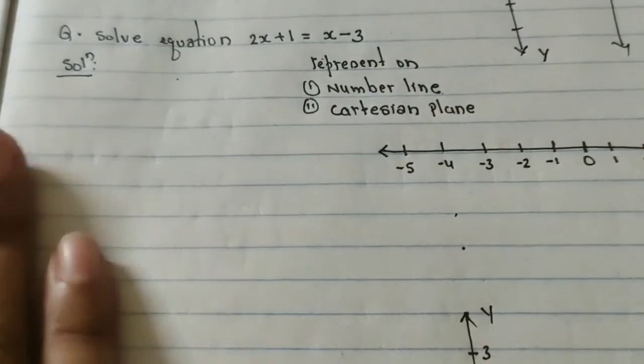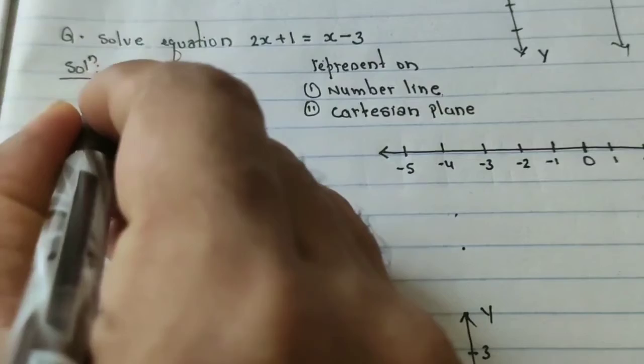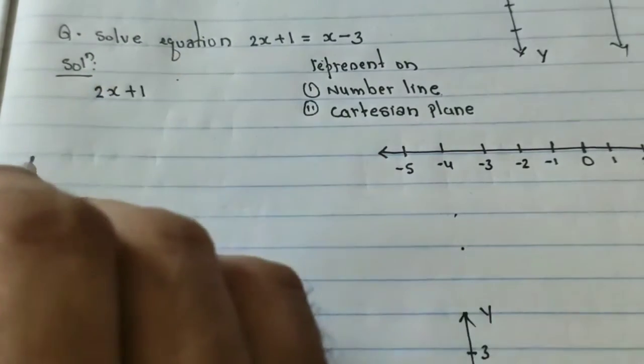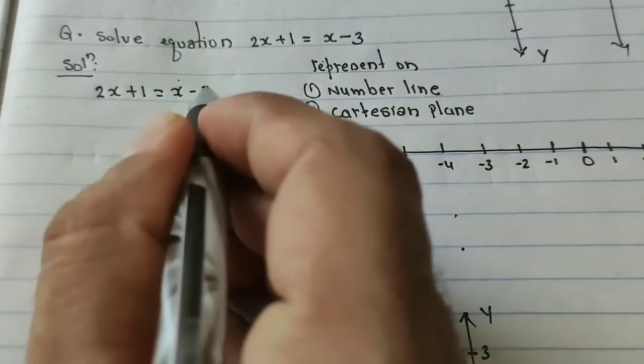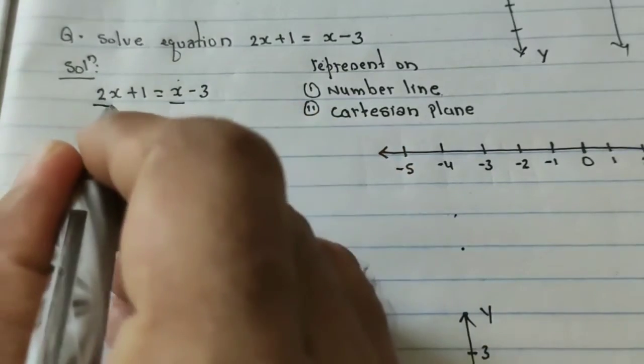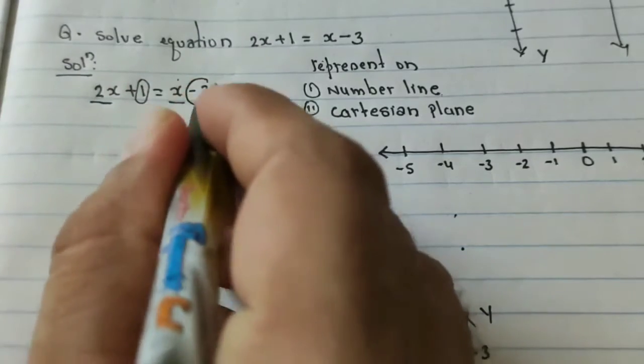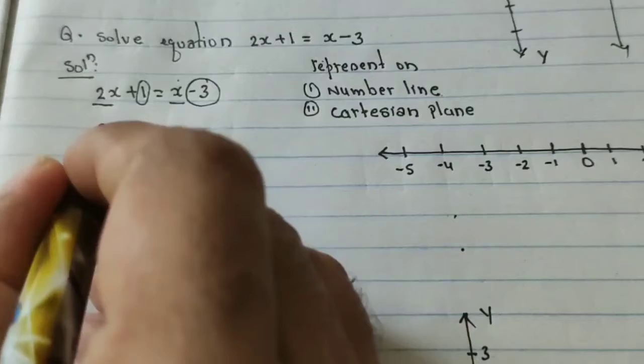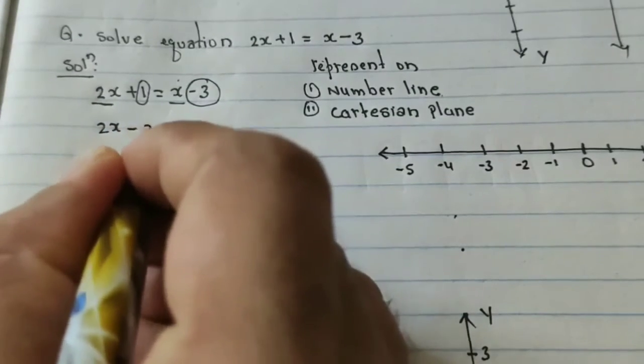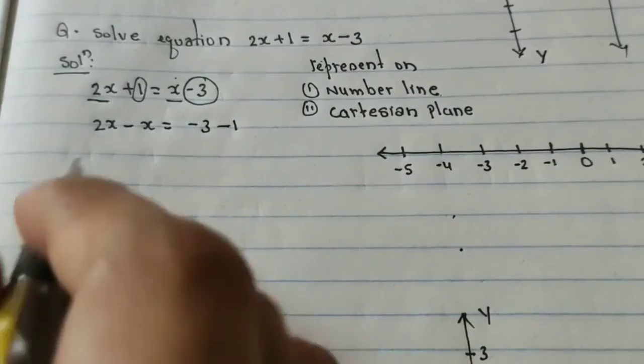First to represent on the number line or on Cartesian plane, we first solve the equation. So equation is 2x + 1 = x - 3. I'm getting the same term on one side and the other terms on the right side.